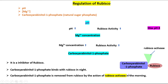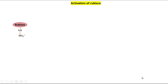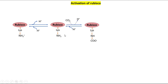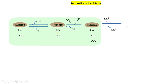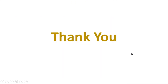Activation of RuBisCO: The epsilon amino group of lysine within the active site of RuBisCO is involved in carbamylation. As pH increases, the epsilon amino group of lysine becomes deprotonated and CO2 binds with it. RuBisCO is also activated by magnesium ion binding.